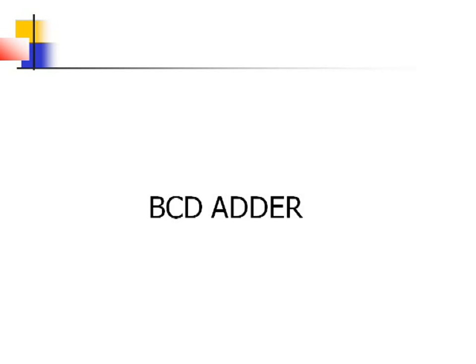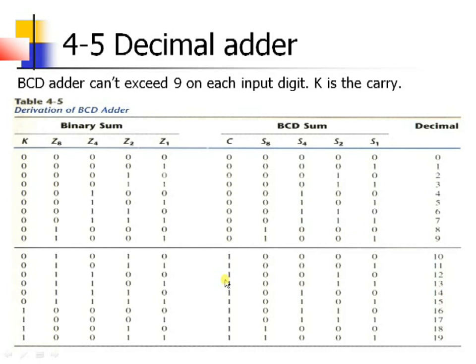Now let us see the BCD adder. I have plotted a truth table for the binary sum along with BCD sum and the decimal numbers. I want to represent the decimal numbers 0 to 19 in BCD as well as in binary form. With the help of BCD format, I have represented the numbers 0 to 9 in decimal using 4 bits.